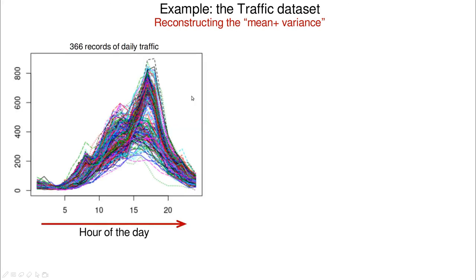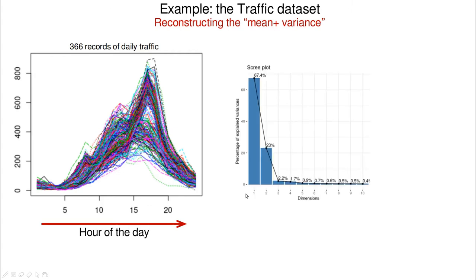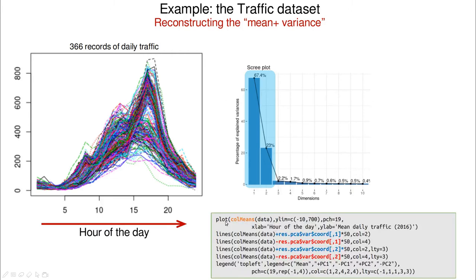Another thing we can do with principal components is reconstruct the mean plus the variance. Here we have 366 observations — a time series, one for each day. If you look at the principal components, almost all the variance is in the first two, meaning we could drop all the other dimensions. Now let's take these principal components and plot the mean value of the data, averaging all of the observations.